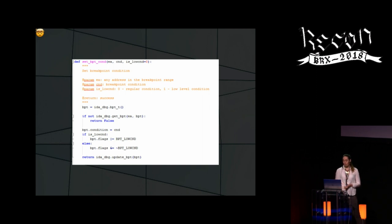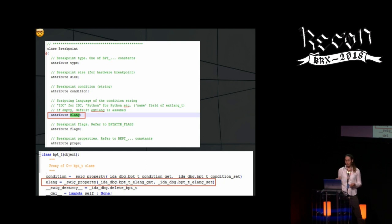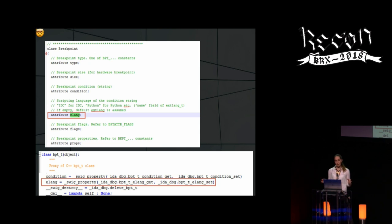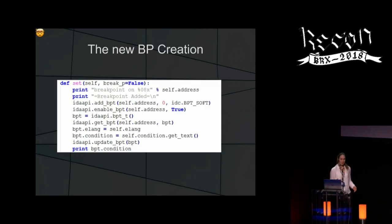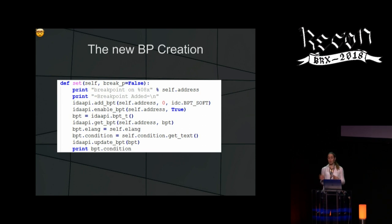ELANG was a good option. There must be a way in IDA Python to do the same thing. I found class BPTT, which is a proxy of the C++ breakpoint class, and it has an ELANG attribute. If I could manually change it, I could have my IDA Python condition. And it worked. This is how you create a breakpoint with a condition in IDA Python: I created the BPTT object and manually changed the ELANG member to Python. You can see self.elang as part of a larger function where you choose whether the condition is written in Python or IDC.